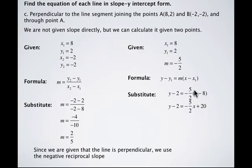When we distribute the -5/2 through the bracket, we end up with -5/2 x, and -5/2 times -8...